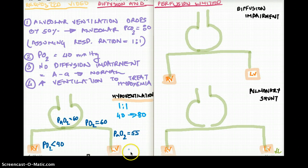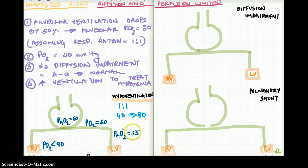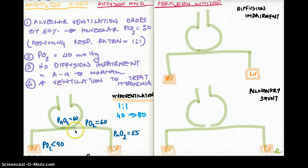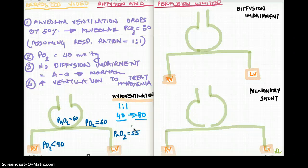To repeat: if the ratio of ventilation is 1:1, which it should be in a normal person with no lung pathology, there is going to be equal ventilation between the alveoli and the capillaries. If the ventilation drops by 50%, then the percentage of carbon dioxide in the alveoli is going to increase, going from 40 to 80 mmHg — an increase of 50% — because carbon dioxide is occupying the same space with less oxygen.